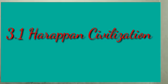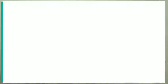Similar remains have been found at four places: Dholavira, Rothal, Kalibangan, and Daimabad. Generally the same characteristics are seen in all the places of Harappan civilization. These characteristics include town planning, roads, construction of houses, drainage system, seals, pots, toys, and burial customs.